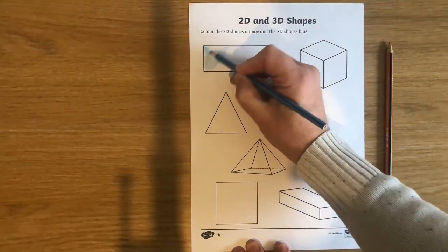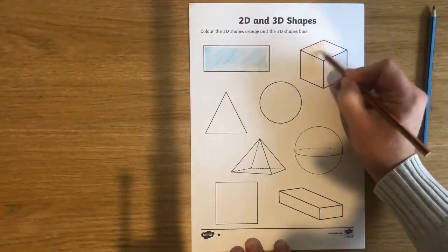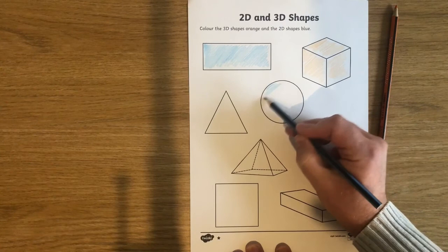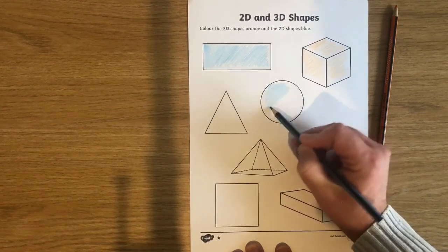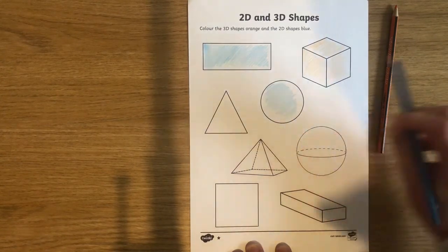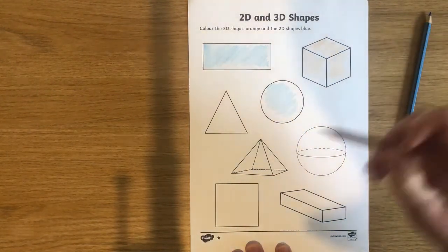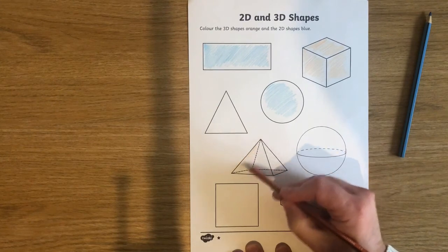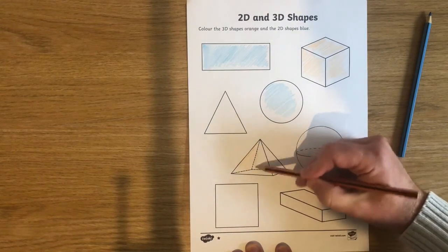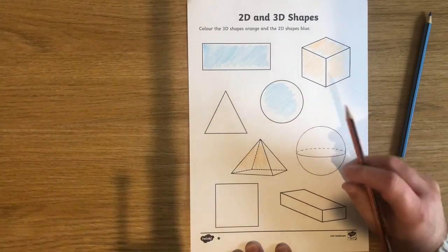Now, sometimes the solid shapes can be quite tricky for children to understand when just looking at the pictures on these coloring sheets. But that's okay, because once you have colored in the whole sheet, you can go for a shape hunt out and about in the world.